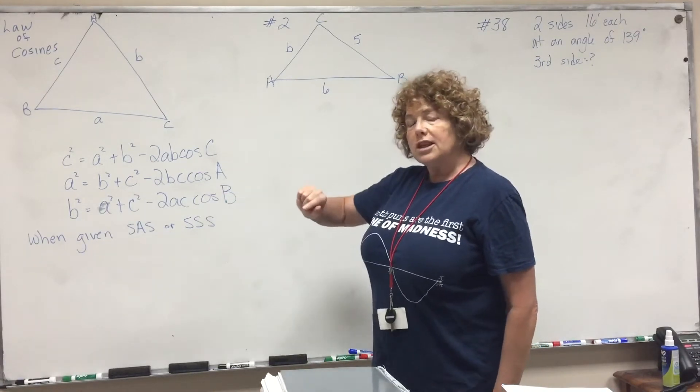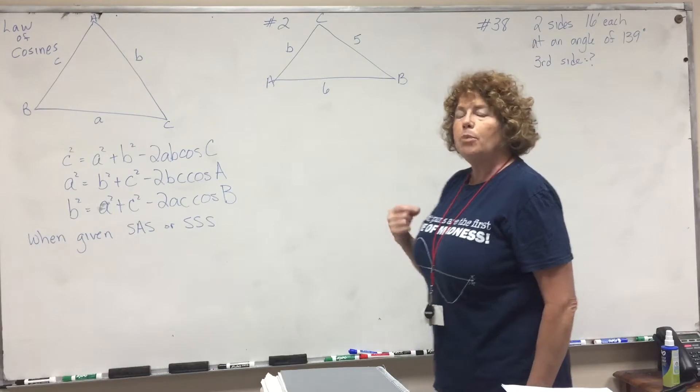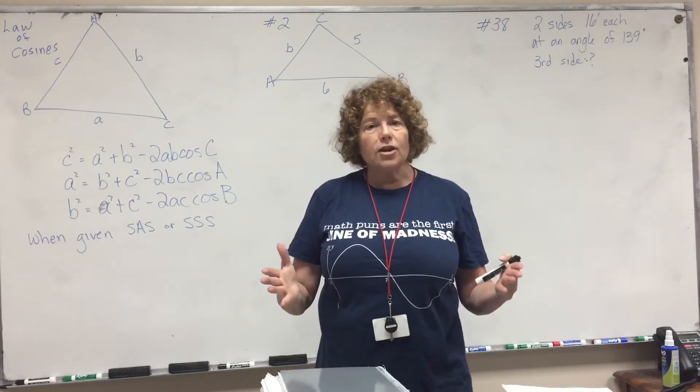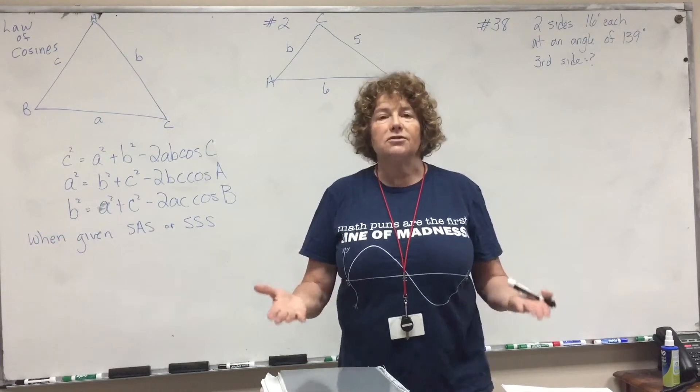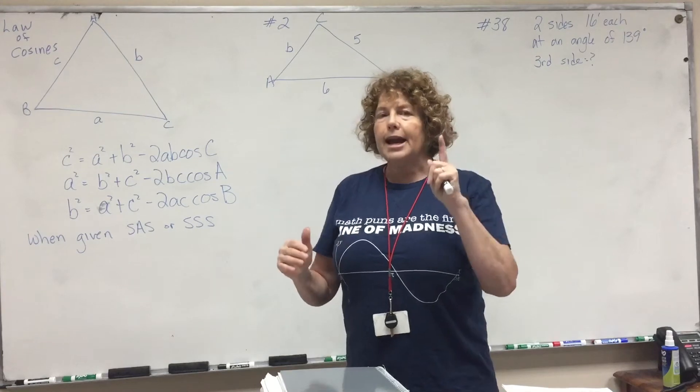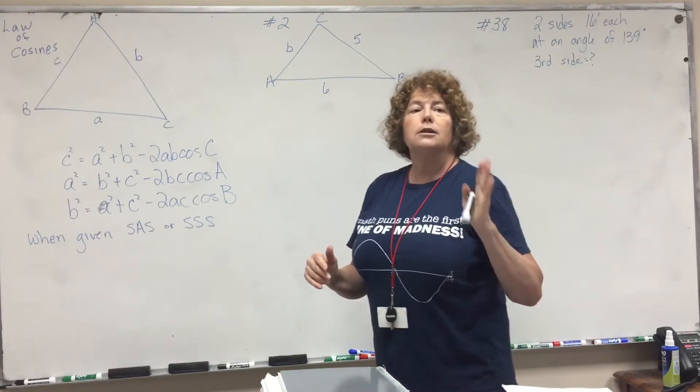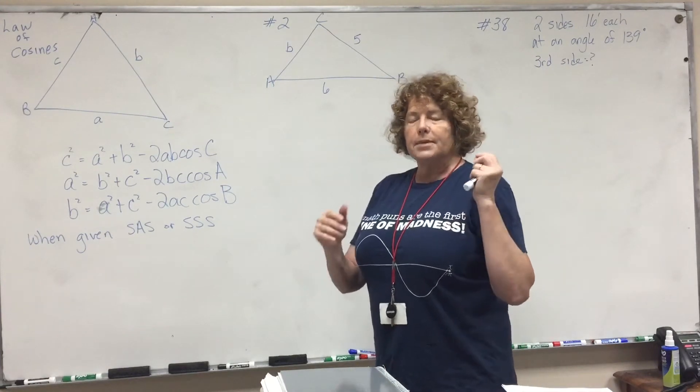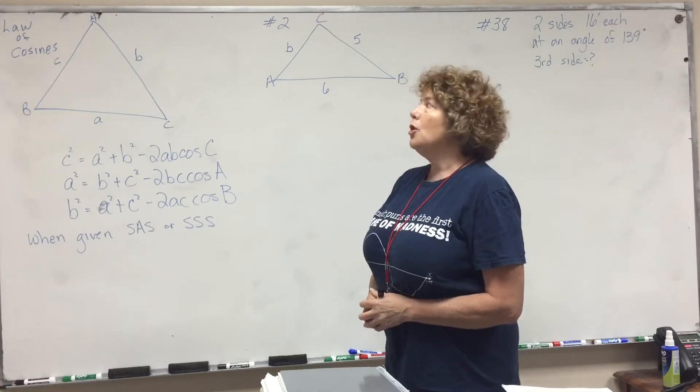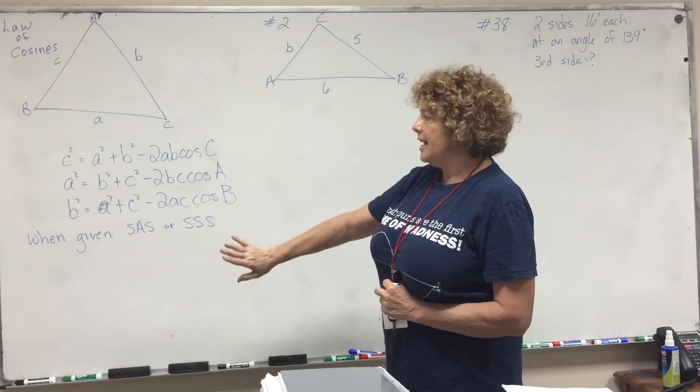First of all, the law of cosines helps you to find missing parts when you do not have a right triangle. When you have a right triangle, you can use regular sine and cosine and tangent to find the missing parts, but unless there's a right angle, you cannot use the regular trigonometric functions. So you have to use either the law of cosines or the law of sines.